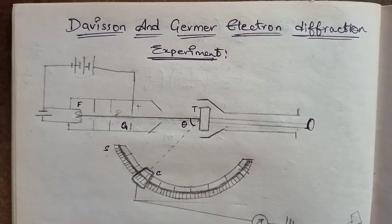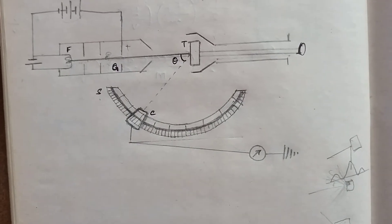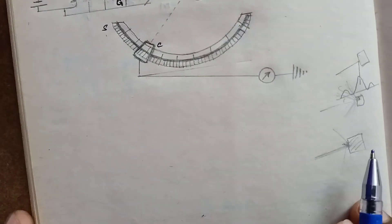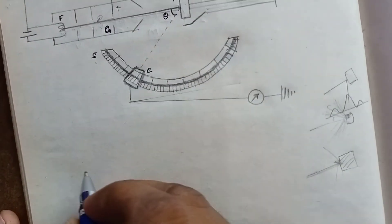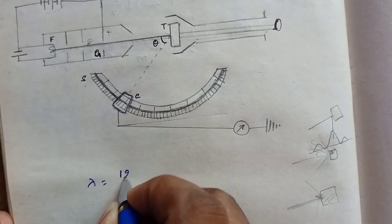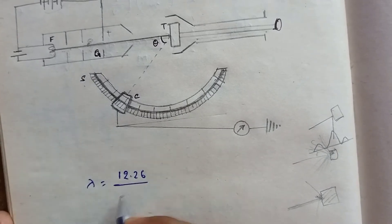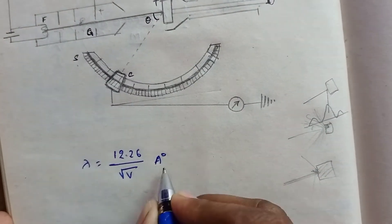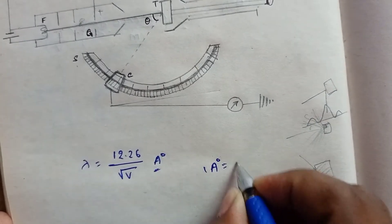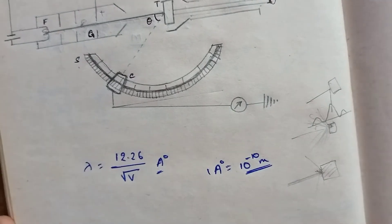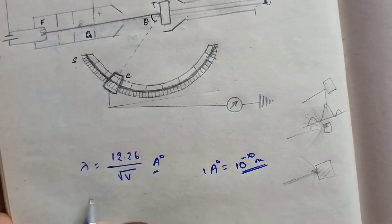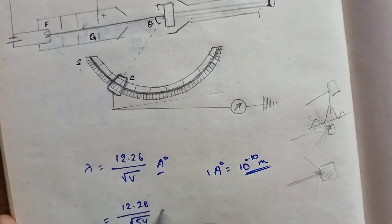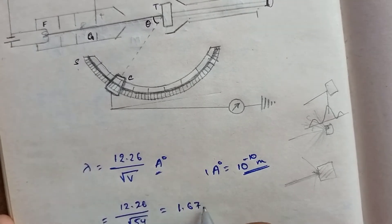Now we calculate the de Broglie wavelength. Using the formula λ = 12.26 / √V in Angstrom units (where 1 Angstrom = 10⁻¹⁰ meters), we substitute V = 54 volts and calculate: λ = 12.26 / √54 = 1.67 Angstroms.